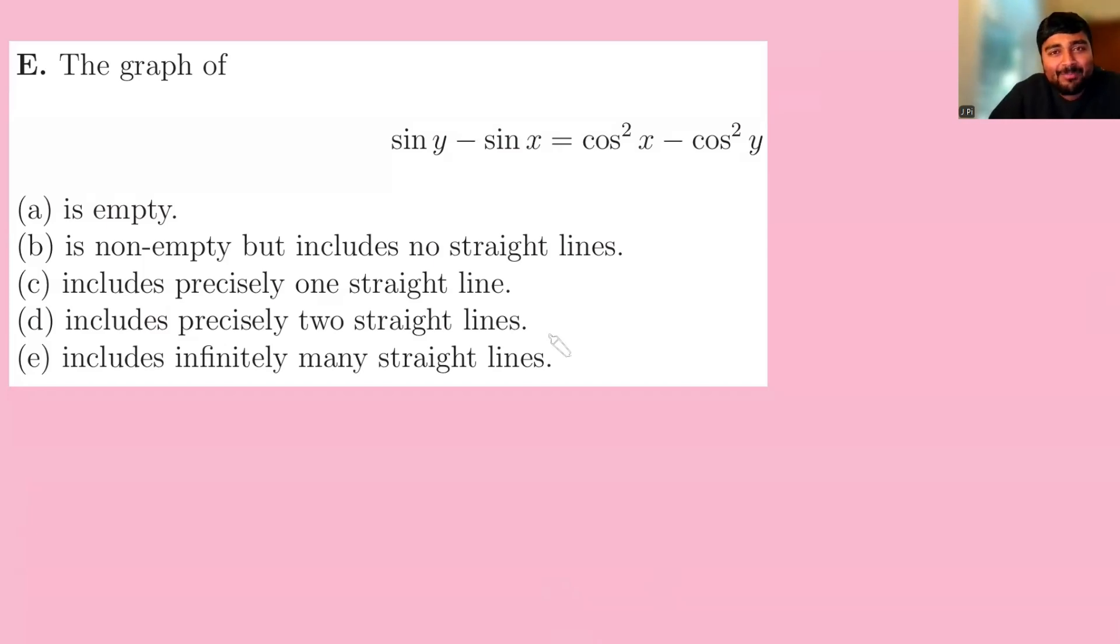This graph sketching problem comes from the maths admissions test for the University of Oxford from the year 2019. We want to know the graph of sine y minus sine x equals cos squared x minus cos squared y.